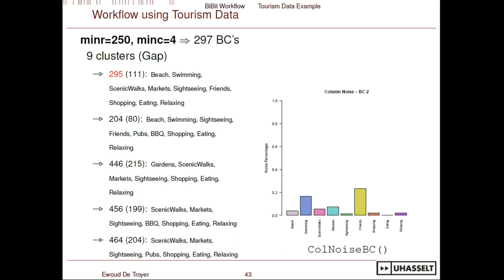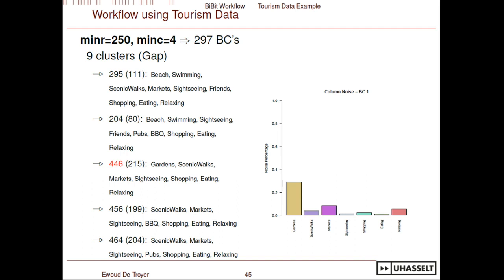Another useful plot is looking at column noise — which activities in the bi-cluster are most often absent. In the first pattern of beach, swimming, scenic walks, and markets, visiting friends was absent most often, followed by the swimming activity. In another pattern, the most absent activity was visiting gardens; in another it was barbecues; and in another, visiting pubs. Those three activities — gardens, barbecues, and pubs — were exactly the differences between those three patterns.